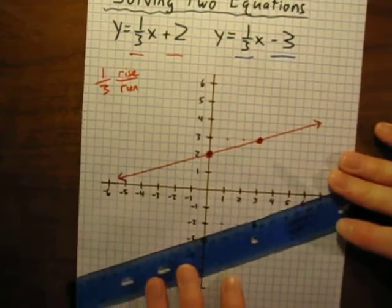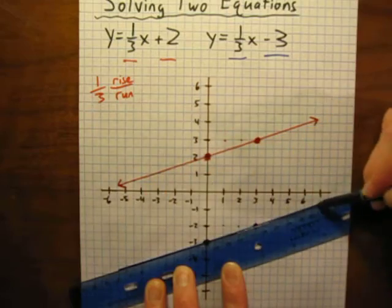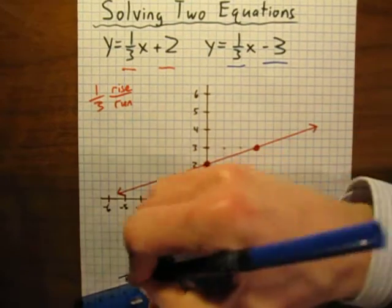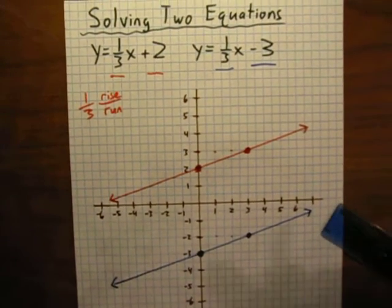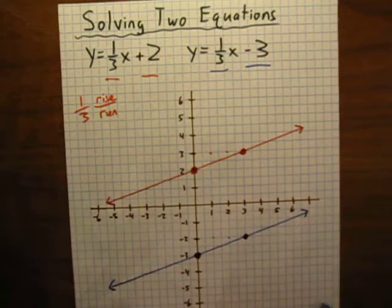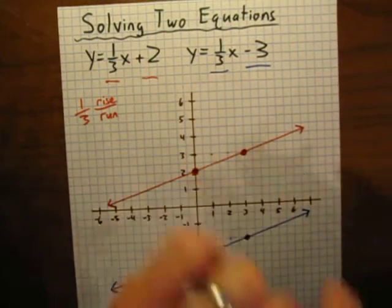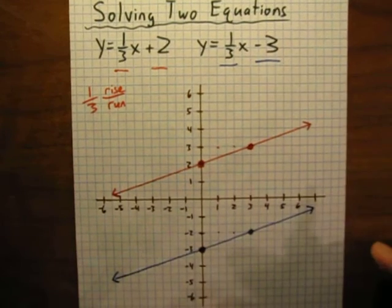Use my ruler, and I will connect them with a straight line. And there it is. There is the line that goes with this equation right here. So, we're solving these two equations. And what that means is we want to find the point of intersection. Well, where do these lines cross? There's the problem.